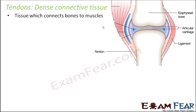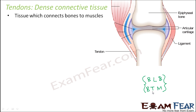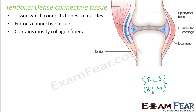Tendon is a tissue which connects bones to muscles. Please do not get confused: ligament will always connect bone to bone, whereas tendon will connect bone to muscle. Remember BLB and BTM — bone to bone is ligament, bone to muscle is tendon. Tendon is again a fibrous connective tissue; it also mostly contains collagen fibers, has good strength, and limited flexibility.